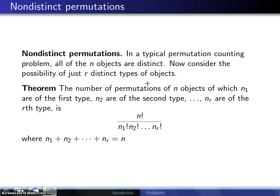is n factorial divided by n1 factorial, n2 factorial, n3 factorial, all the way up to n sub r factorial, where n1 plus n2 plus n3 all the way up to n sub r is equal to n.